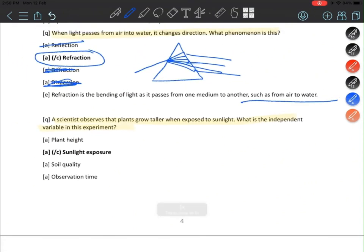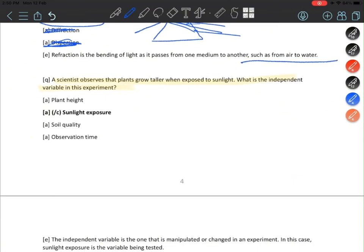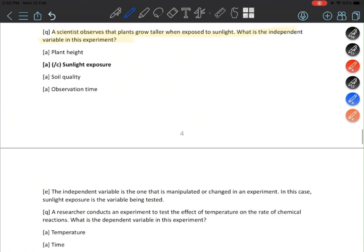A scientist observes that plants grow taller when exposed to sunlight. What is the independent variable? The independent variable is the one we can change, like we can change the measurement. Plant height we cannot change quickly, soil quality we can change but can you change the soil itself? Observation time is something we can change, but in this scenario the independent variable will be sunlight exposure.